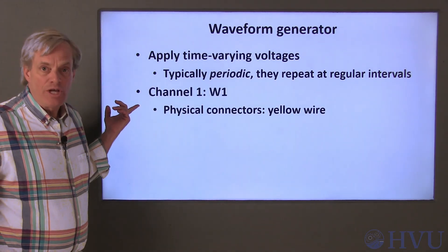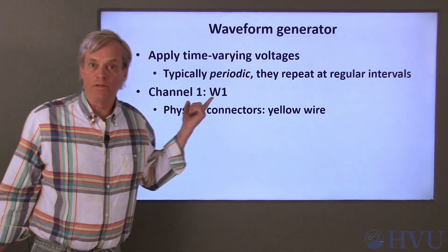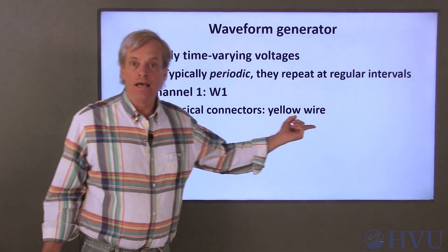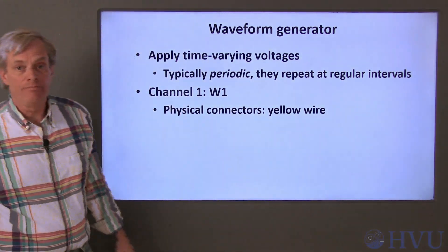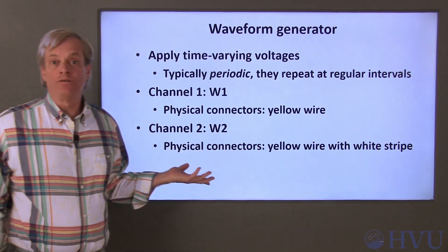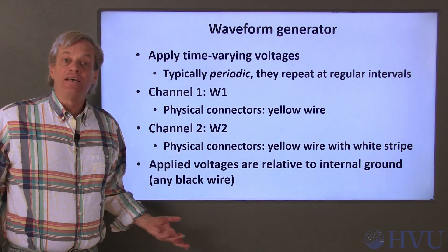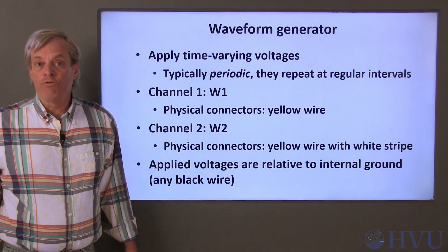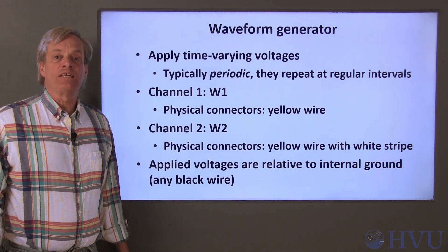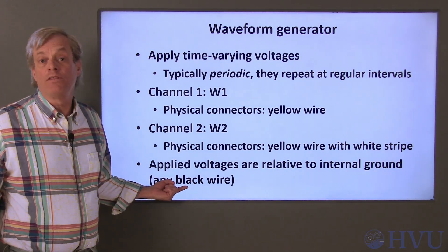The waveform generator has two channels. Channel 1 is accessed via the W1 terminal. Its physical connector is the yellow wire on the flywire connector. Channel 2 is accessed via the W2 terminal. Its physical connector is the yellow wire with a white stripe. As with the supplies instrument, the applied voltages are relative to the device's internal ground, which can be accessed by any of the black wires on the flywire connector.